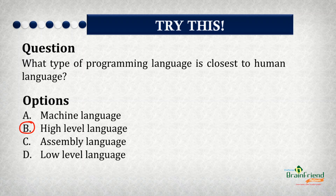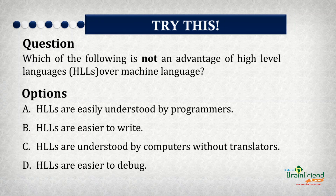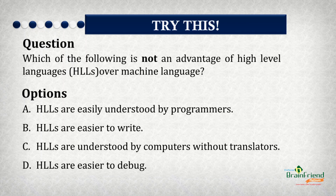Let's try out one more. Which of the following is NOT an advantage of high-level languages over machine language? The options are: A. High-level languages are easily understood by programmers. B. High-level languages are easier to write. C. High-level languages are understood by computers without translators. D. High-level languages are easier to debug. And the correct option is C.